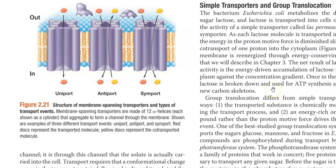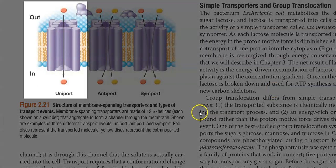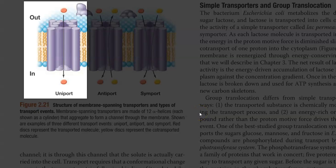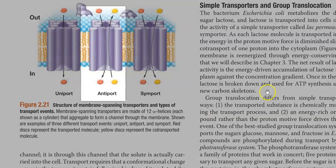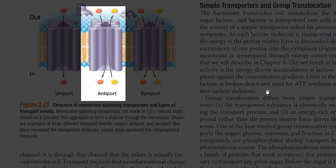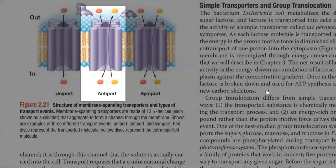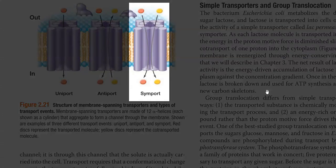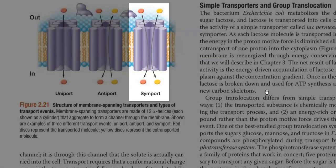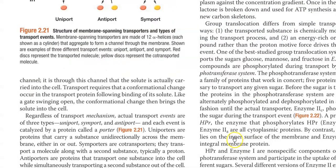Three types of simple transport systems seem to be existing. One is a uniport, in which the substrate is moved in a unidirectional manner. Antiport is the one in which it is moved in the opposite direction. And finally, symport is the one in which two substrates are moved inside together. Regardless of these different simple transport mechanisms, the event is catalyzed by a protein called porters.